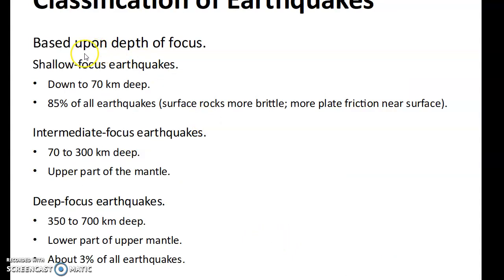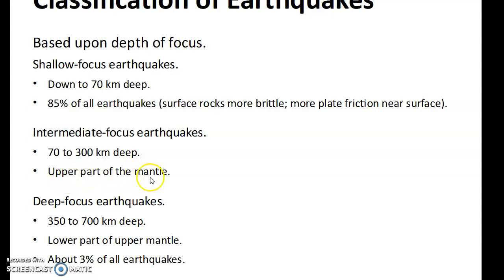Earthquake classification is based on depth of focus. A shallow focus earthquake is down to 70 kilometers deep — 85% of all earthquakes are like that. Intermediate earthquakes are 70 to 300 kilometers deep, in the upper part of the mantle. Deep focus earthquakes are in the lower part of the mantle, about 3% of all earthquakes, and these are the worst of all.